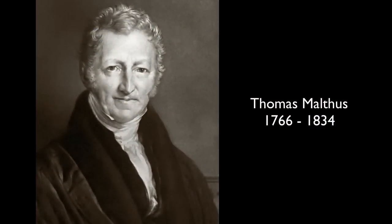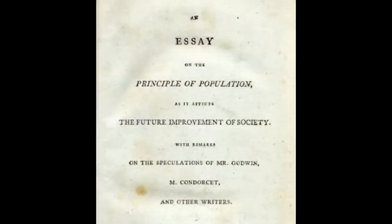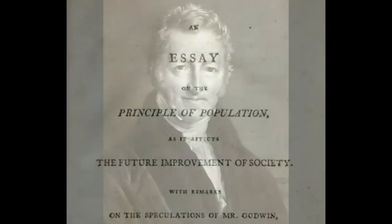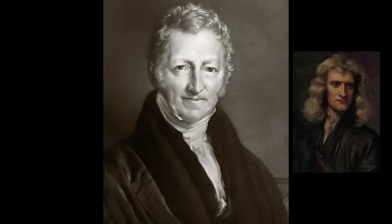Thomas Malthus was a political economist and Enlightenment thinker who observed a growing population with increasing concern. To explain poverty and famine he wrote a famous essay at the end of the 18th century entitled An Essay on the Principle of Population. In good Enlightenment fashion he was trying to find natural laws, similar to Newton's law of gravity, that could explain the continuing existence of poverty in the world.